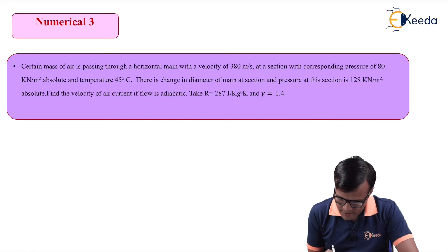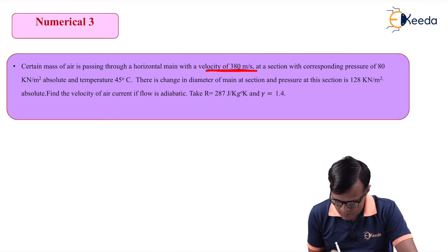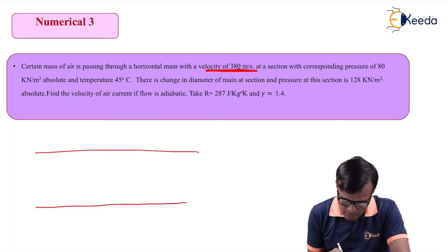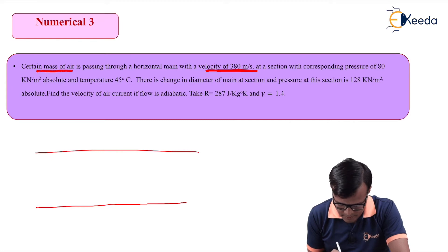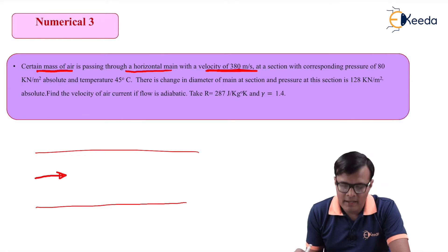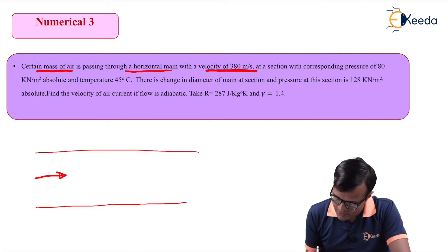A certain mass of air is passing through a horizontal main pipe with a velocity of 380 meters per second. Since the pipe is horizontal, if we apply Bernoulli's equation, the datum head remains the same at all sections. At the first section, the corresponding pressure is 80 kilonewton per meter square absolute and temperature is 45 degrees centigrade.